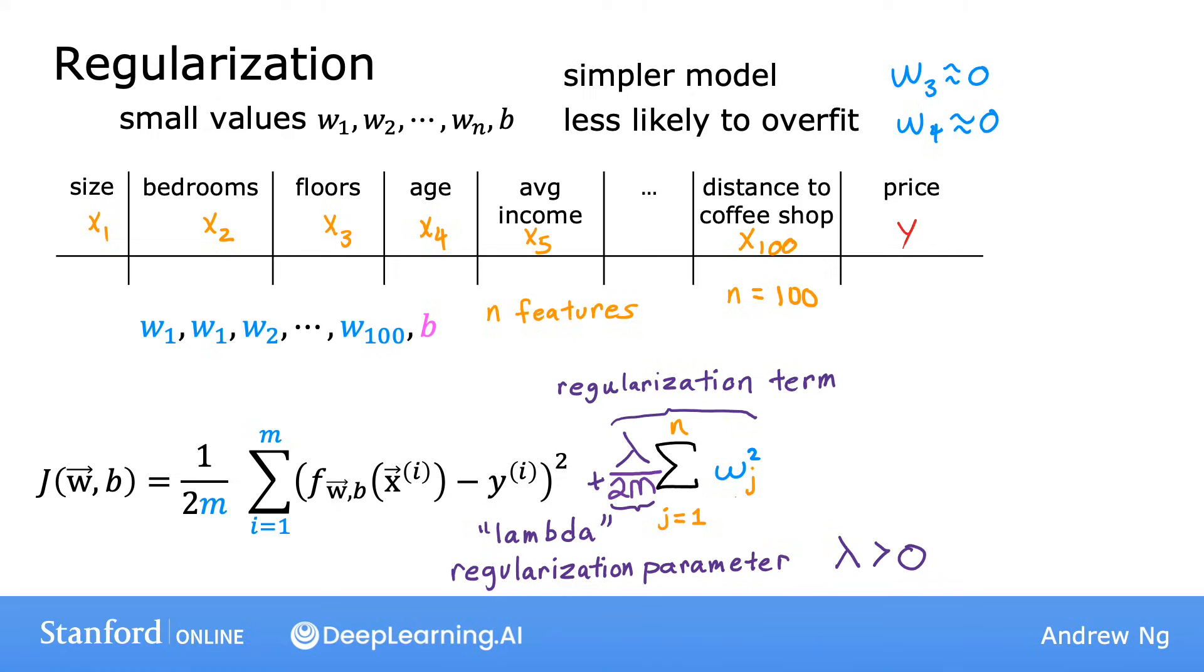It turns out that by scaling both terms the same way, it becomes a little bit easier to choose a good value for lambda, and in particular, you find that even if your training set size grows, say you find more training examples, so m, the training set size is now bigger. The same value of lambda that you had picked previously is now also more likely to continue to work if you have this extra scaling by 2m.